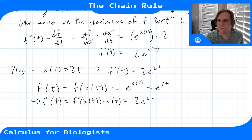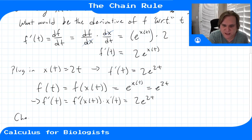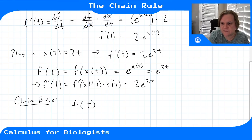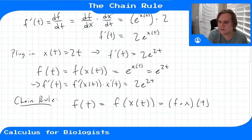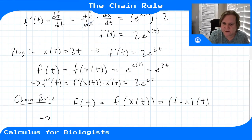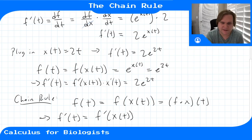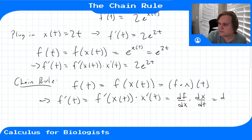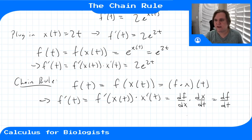The chain rule says: for a function f of t, where f is actually a function of x which is a function of t — so f of x of t — the derivative f prime of t is the derivative of the outer function with respect to the inner, evaluated at the inner, times the derivative of the inner function with respect to your actual variable. In differential notation: df/dt equals df/dx times dx/dt.